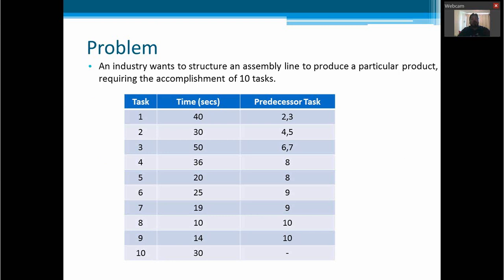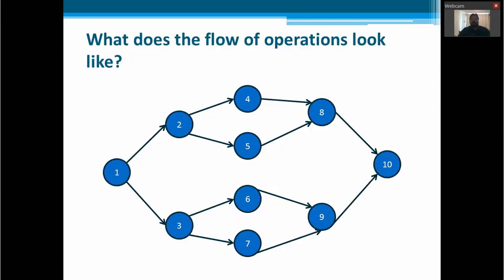Let's consider that we have this problem. An industry wants to structure an assembly line to produce a particular product requiring the accomplishment of 10 tasks. We have the time of process for each task in seconds and the predecessor tasks for each of them. We can establish the flow of variations, and this will look like this diagram.